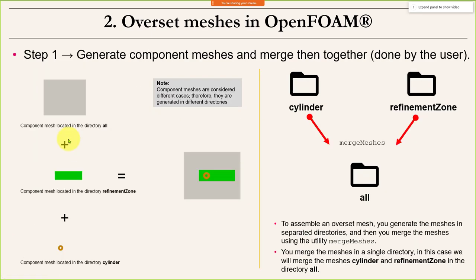In a case with three component meshes — background, refinement zone, and mesh around a cylinder — you generate each mesh in its own folder following OpenFOAM's data structure. Then you merge these meshes into a folder called 'all', which will contain everything together. This is straightforward but you need to create all the data structure correctly.